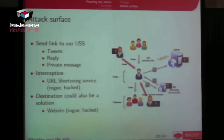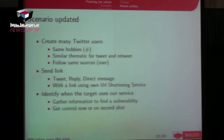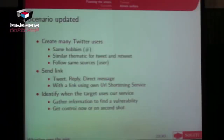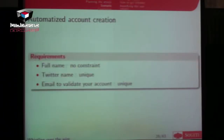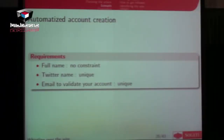So to summarize sending and gathering information: to send links we can post tweets and hope the target clicks, reply to their messages, or send private messages. To gather information and deliver an exploit we can use the URL shortening service or get access to the final website. The main problem we have with both approaches is: how can we be sure that the person following the link is our actual target and not another user?